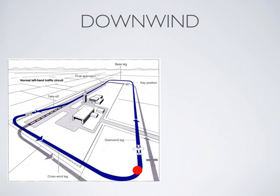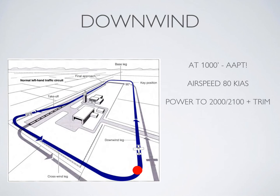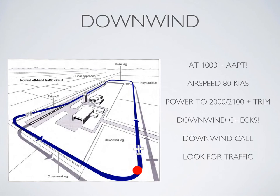Once on downwind, reach 1000 feet before reducing power. Bring power back to about 2000–2100 RPM using attitude, airspeed, power, trim — the standard level-off procedure. Attitude first, bring airspeed up to 80 knots, then bring power back. Do your downwind checks, then make your downwind call: 'Golf Tango Yankee, back left-hand downwind, runway 19, touch and go.' Look for traffic; tower will give you a sequence number. Judge your base turn based on 45-degree spacing off the runway or visual spacing from traffic.